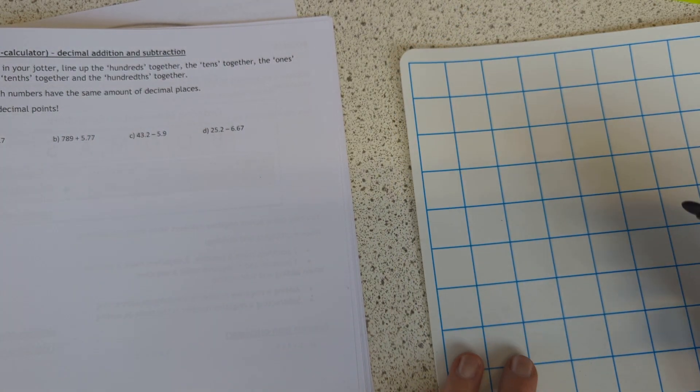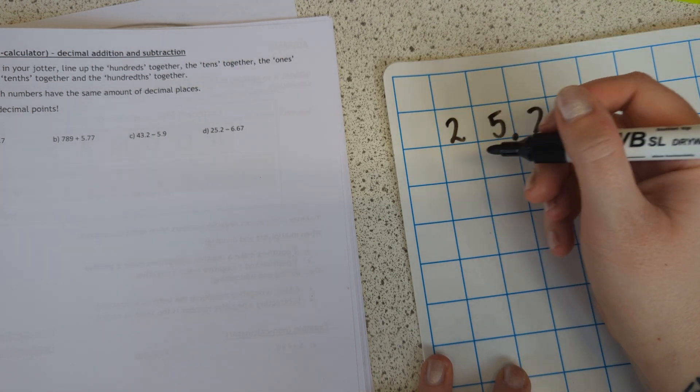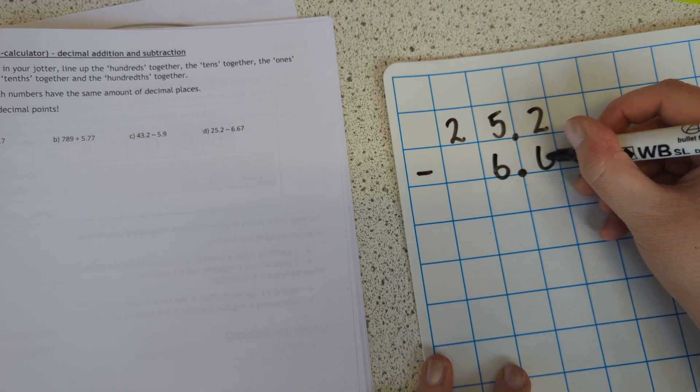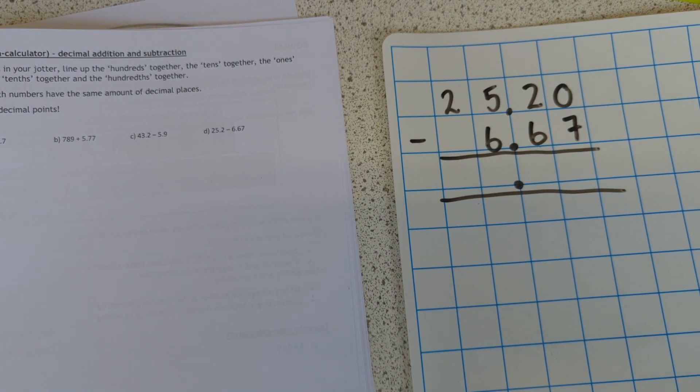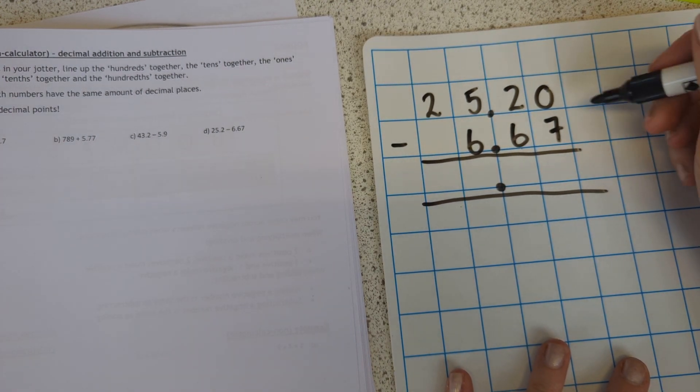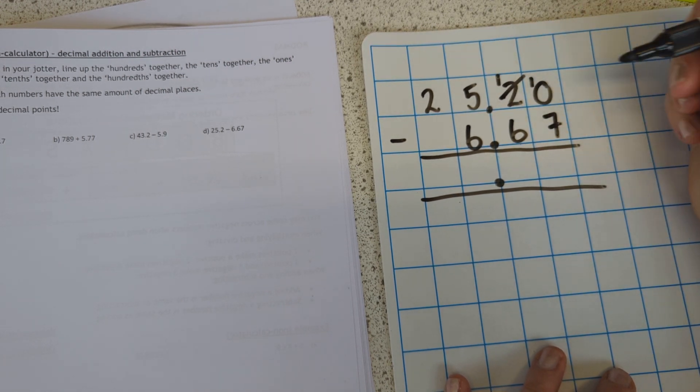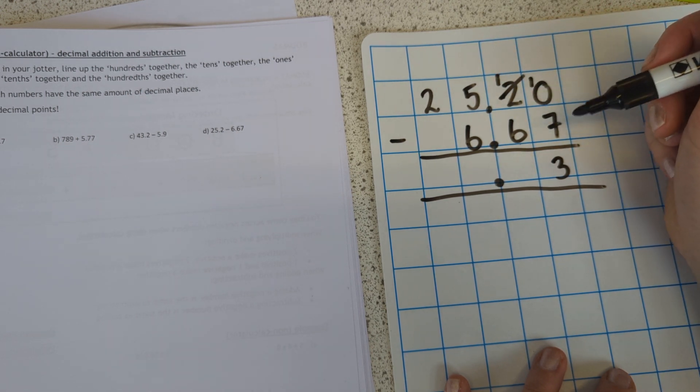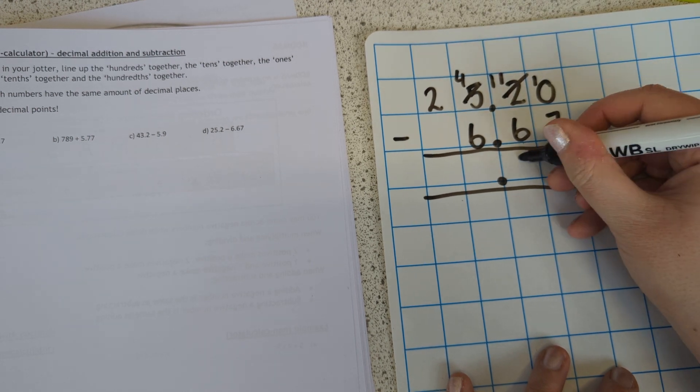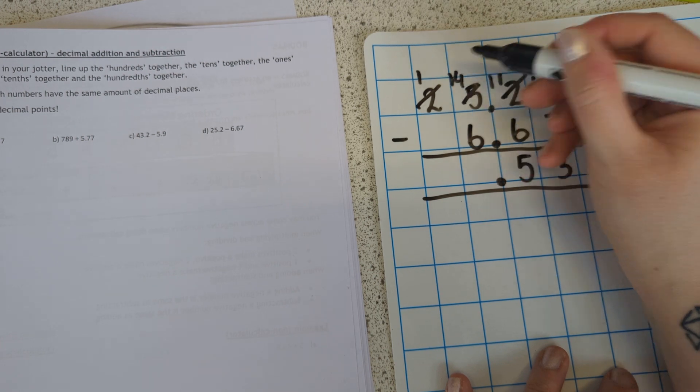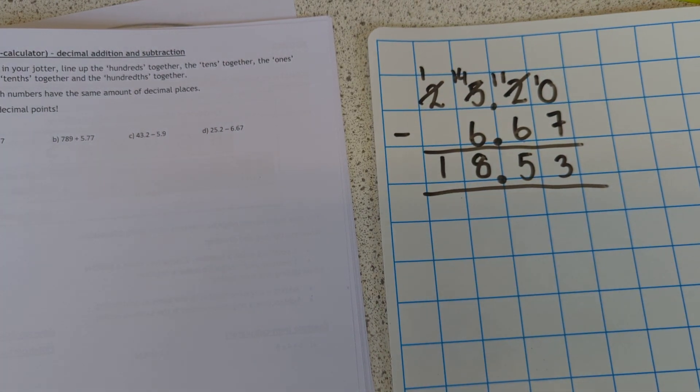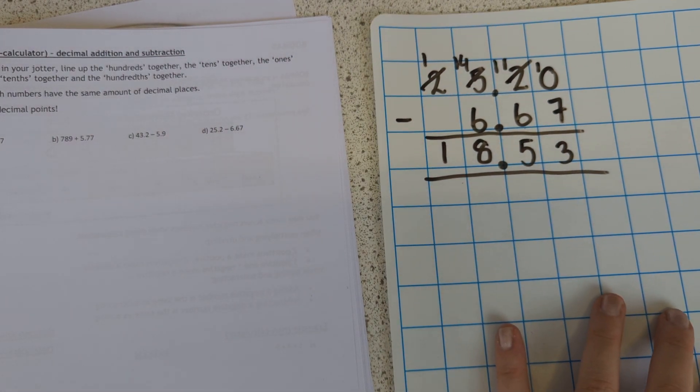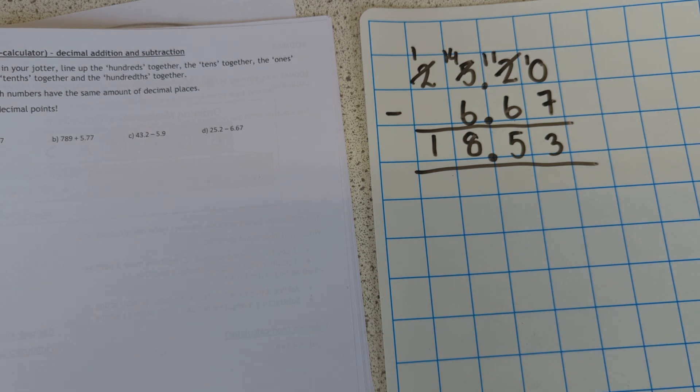Last but not least, just another subtraction sum. So we've got 25.2, take away 6.67. Again, make sure you line up your numbers. I cannot say how many times I've seen pupils mess up just because their numbers are all over the place and they don't know what they're subtracting, they don't know what they're adding. Line up your numbers. So again, I can't do 0 take away 7, so I'm going to have to borrow. So I've got 10 take away 7, which is 3. I can't do 1 take away 6, I can't do, so I'm going to have to borrow. So that becomes 11 take away 6, which is 5. I can't do this either. What a nightmare. So I'm going to have to borrow, move over here. So that's 14 take away 6, which is 8. And then obviously the 1, so I get 18.53. Apparently I'm getting my numbers all mixed up. So that is adding and subtracting decimals. If you're not comfortable with borrowing, please watch the first video.